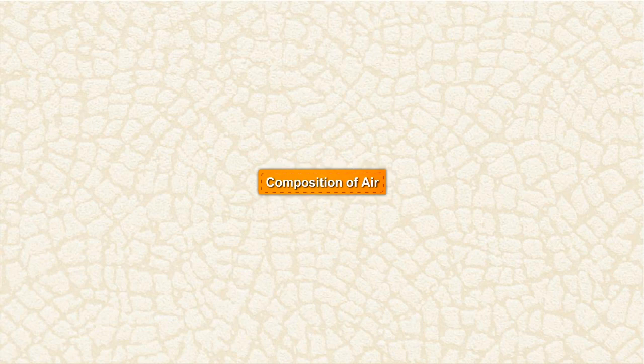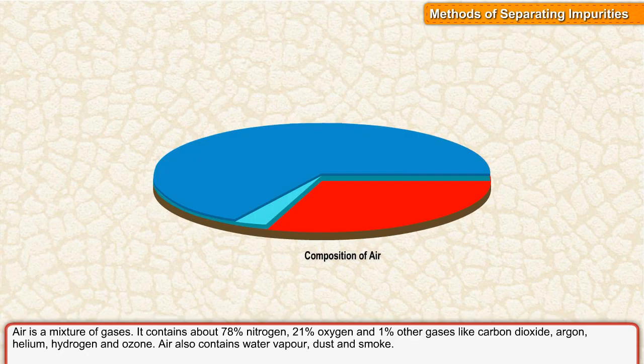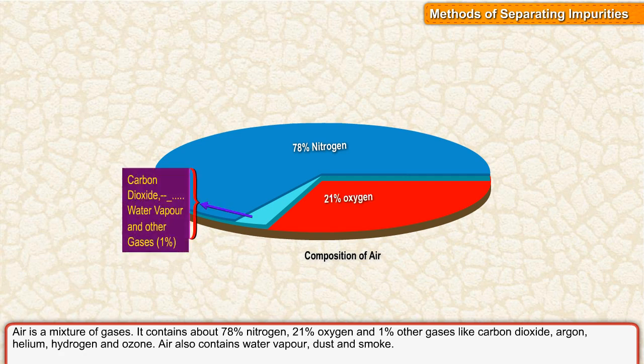Composition of Air. Air is a mixture of gases. It contains about 78% nitrogen, 21% oxygen, and 1% other gases like carbon dioxide.